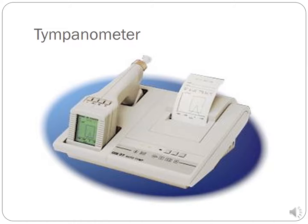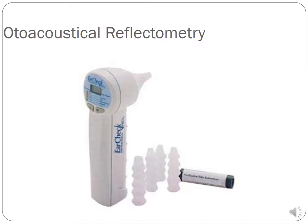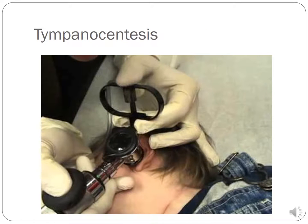Here's an example of a tympanometer and its readout. The A curve is a normal curve. The B curve is flat with decreased mobility of the tympanic membrane — seen with otitis media with effusion where the TM is not moving at all. The C curve shows negative pressure, as with a retracted eardrum — you'll get the peak sooner than expected. Also shown are examples of acoustic reflectometry and tympanocentesis.